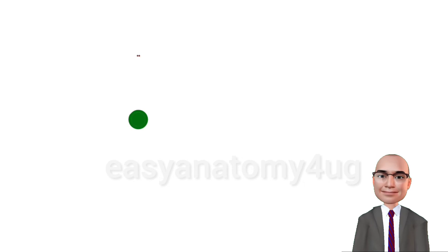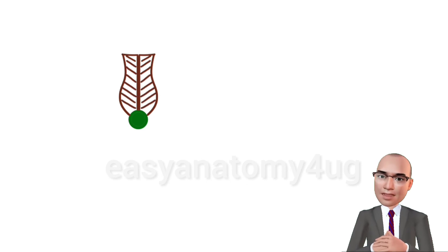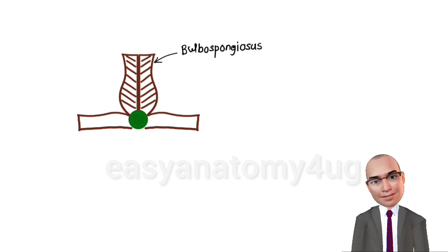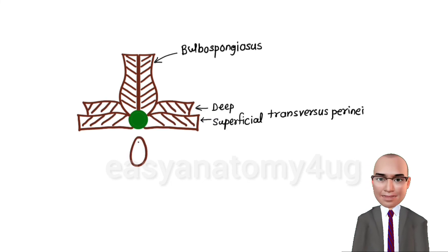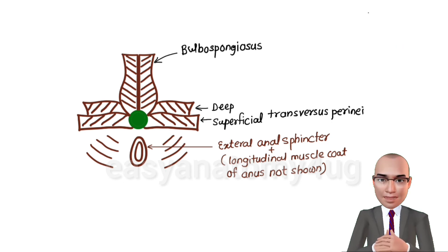The perineal body is one of the important muscular supports of the uterus; it is made up of 10 perineal muscles. Let us draw the perineal body. Draw two bulbospongiosus muscles, then draw two superficial transverse perinei, two deep transverse perinei, the external anal sphincter, and surrounding it the levator ani muscle. The longitudinal muscle coat is not shown in the diagram.